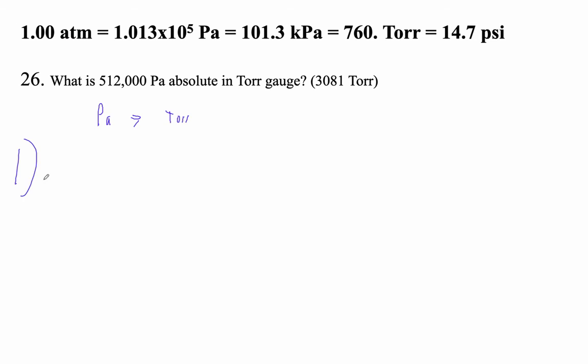Step one: 512,000 pascals over an atmosphere in pascals - that's 101,300 pascals. That's what this number is: 1-0-1-3-0-0.